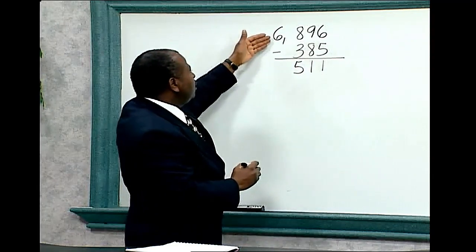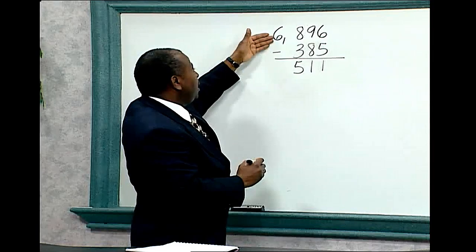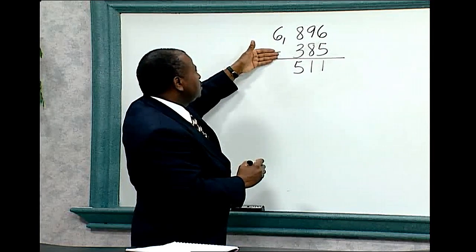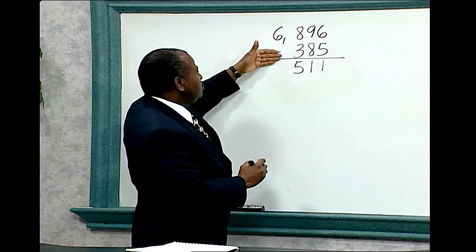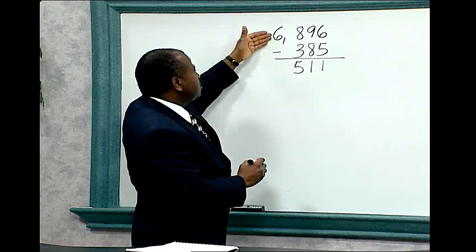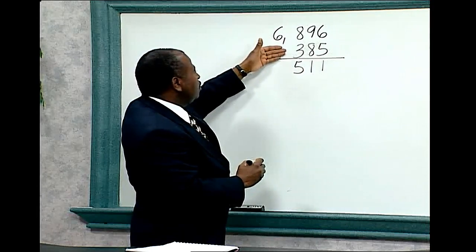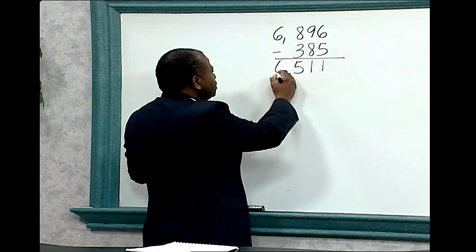Notice that in the thousands column, there is no number under the 6. It's understood — think 0. 6 minus 0 equals 6.